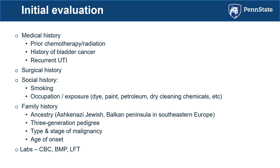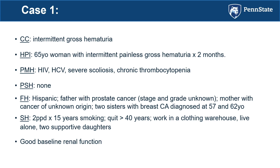Going back to the case: this woman has a history of HIV, hepatitis C, severe scoliosis, chronic thrombocytopenia with platelets chronically in the 40s, no prior surgery, Hispanic ethnicity, father with prostate cancer, mother with cancer of unknown origin, two sisters with breast cancer at standard age of onset. Social history: she smoked two packs per day for 15 years, quit over 40 years ago, worked in a clothing warehouse, lives with two supportive children. She has good baseline renal function.